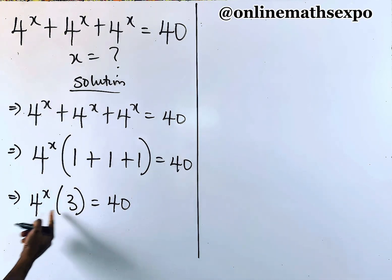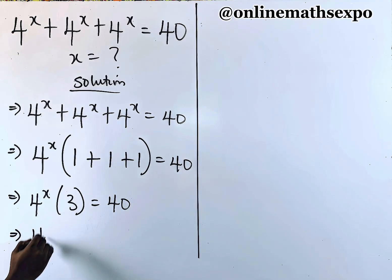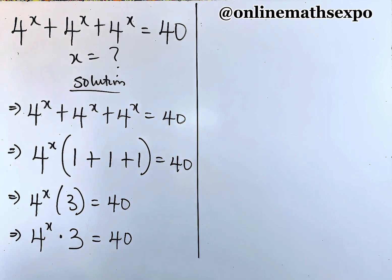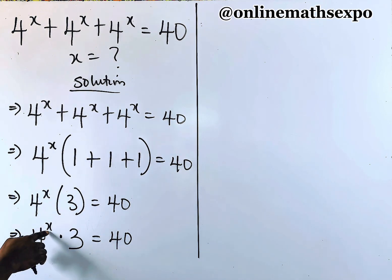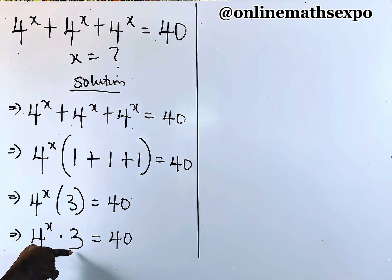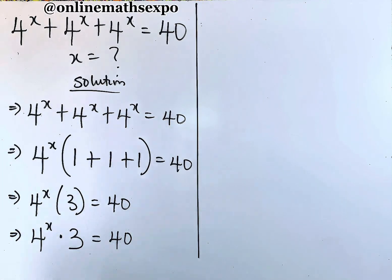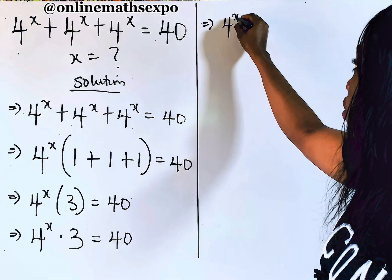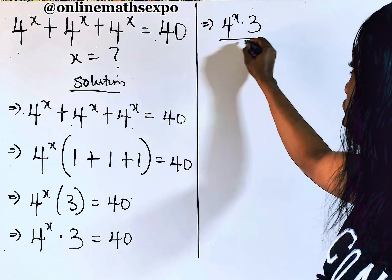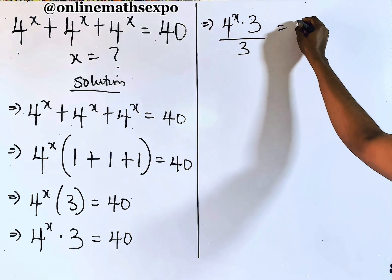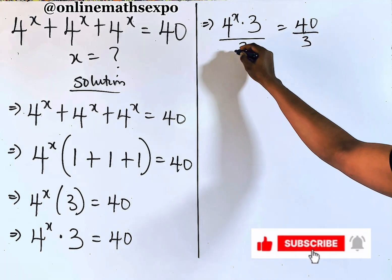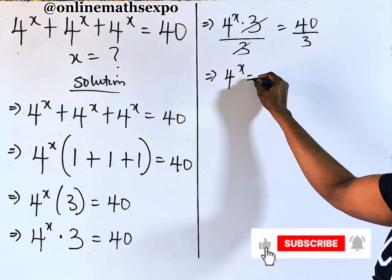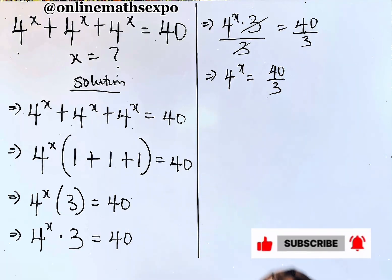Remember that this is multiplying, so it's the same as 4 to the power of x multiplied by 3 is equal to 40. Now to get x, we need to eliminate this 3. Since it's multiplying, we are going to divide both sides by 3. So we have 4 to the power of x is equal to 40 divided by 3.